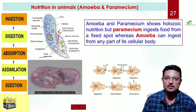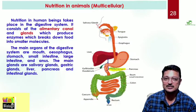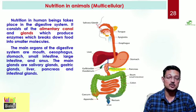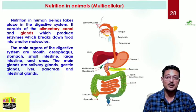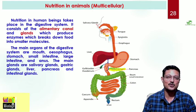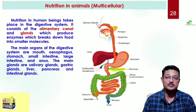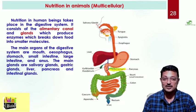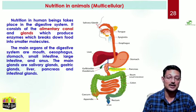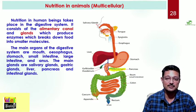Now we shall move to the next category - the multicellular organism. The representative organism is human being. Being multicellular, there is a whole system in place which we call the digestive system. The digestive system is made up of two different components: one is called the alimentary canal and the other is digestive glands. Alimentary canal and digestive glands together make the digestive system.